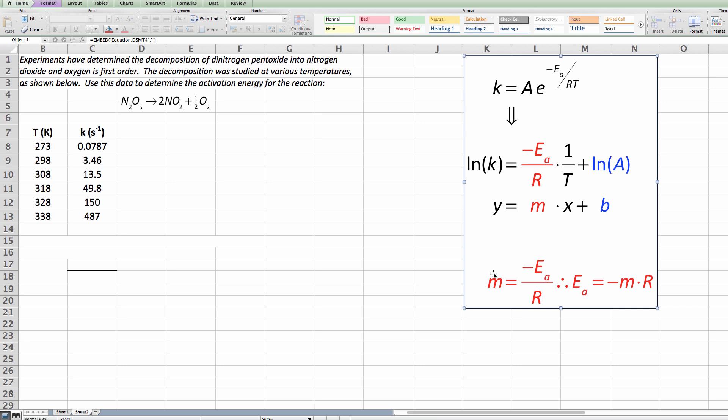So we take our slope right here of that graph, we rearrange it, we find that the activation energy can be calculated by taking the slope and multiplying by the gas constant R, which is 8.314 joules per Kelvin mole.